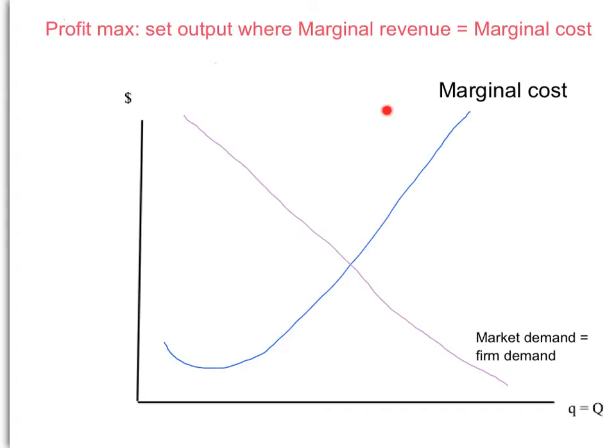We have marginal cost here. For a perfectly competitive firm, marginal revenue was easy because marginal revenue was the price. Every time you sold another unit you just got the price for that unit. If the price was $100 per unit and you sold the first unit you got $100; if you sold another unit you got another $100. So for a perfectly competitive firm, price was marginal revenue.